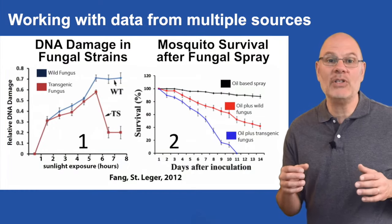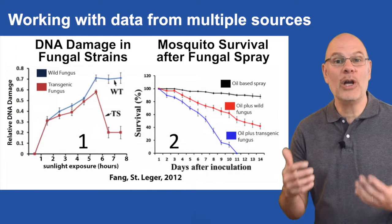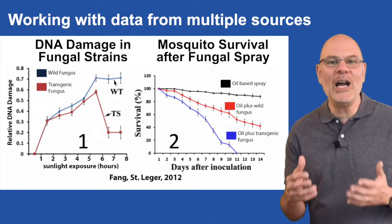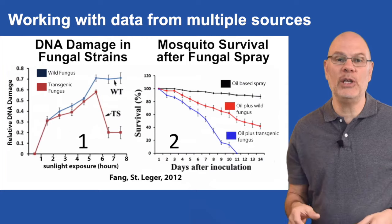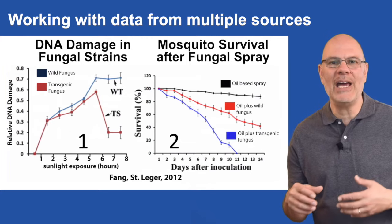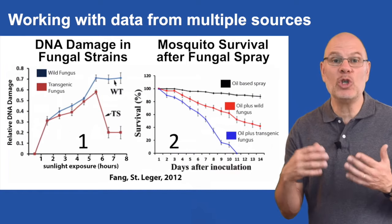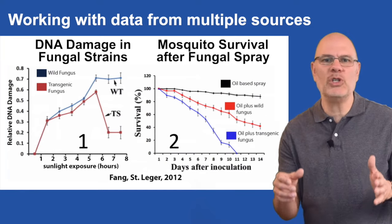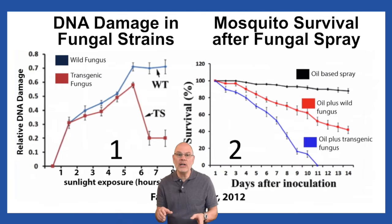A really tough challenge on AP Bio FRQs is interpreting data from two or more different sources and then drawing conclusions and making predictions related to the underlying biology. Malaria is a devastating disease that affects hundreds of millions of people worldwide, caused by a parasite spread by a mosquito. For years, pesticides like DDT have been used to control the mosquito, but mosquitoes usually evolve resistance and the pesticides cause environmental and human health problems. A group of researchers was interested in using a type of biological control — a fungus — to control the mosquito.